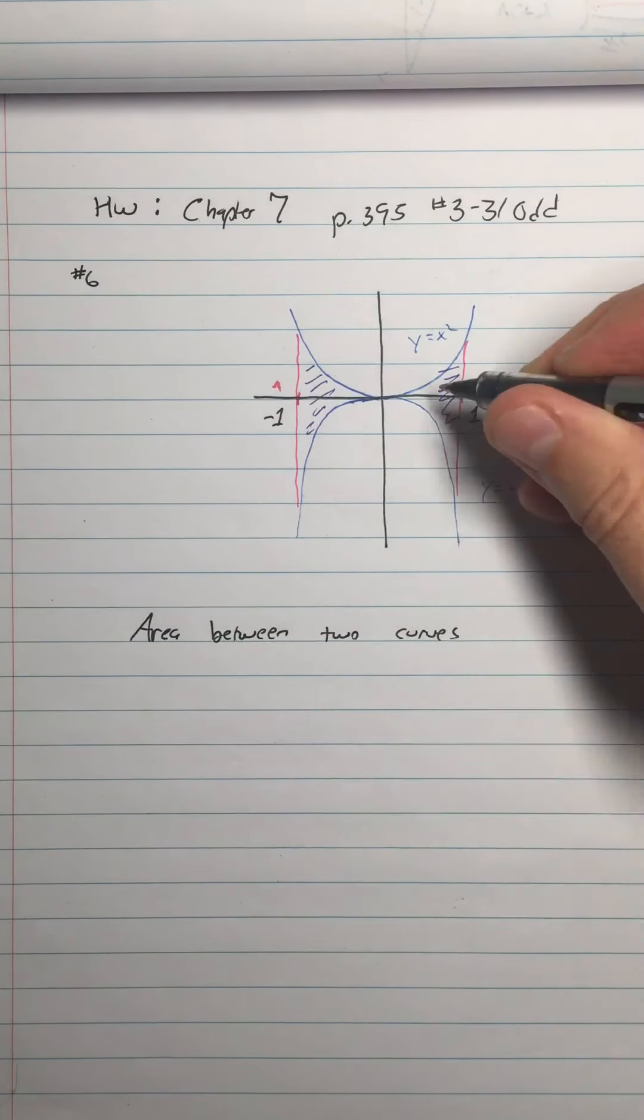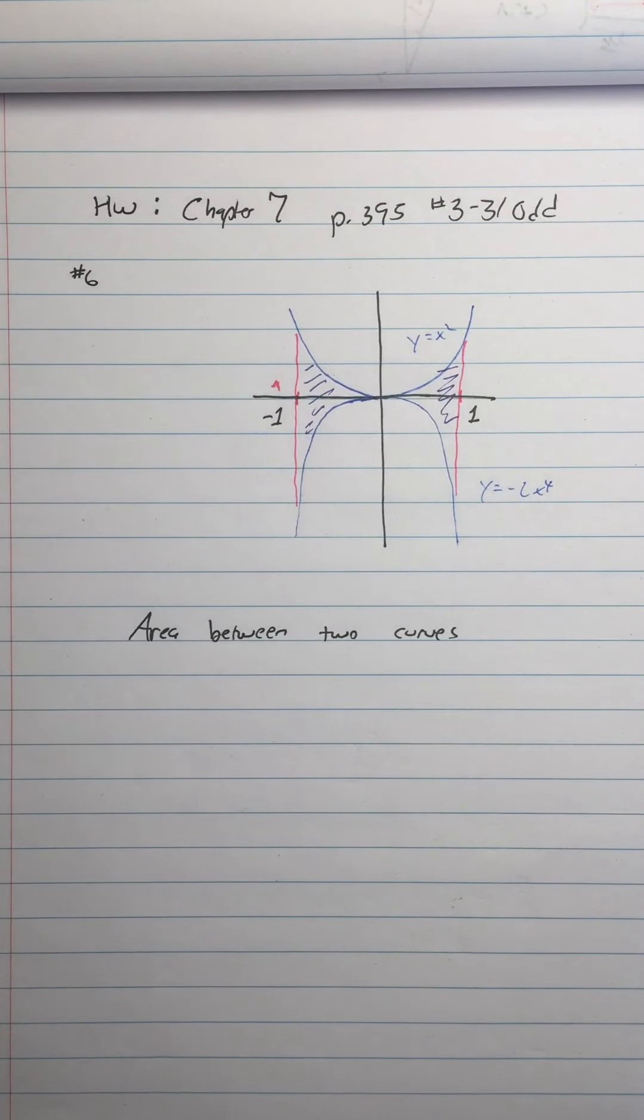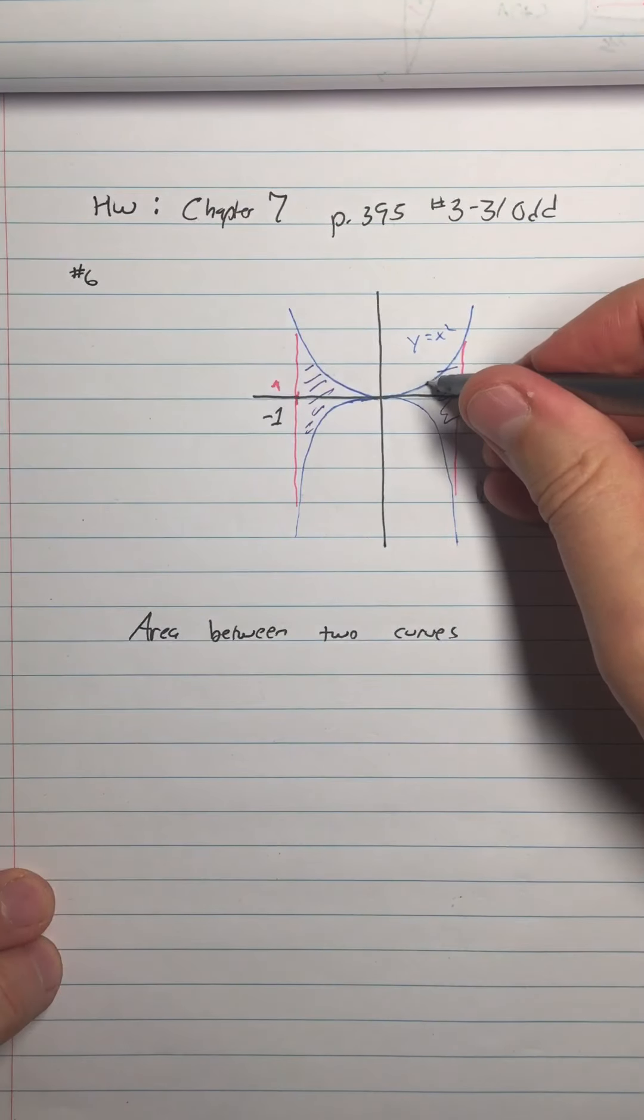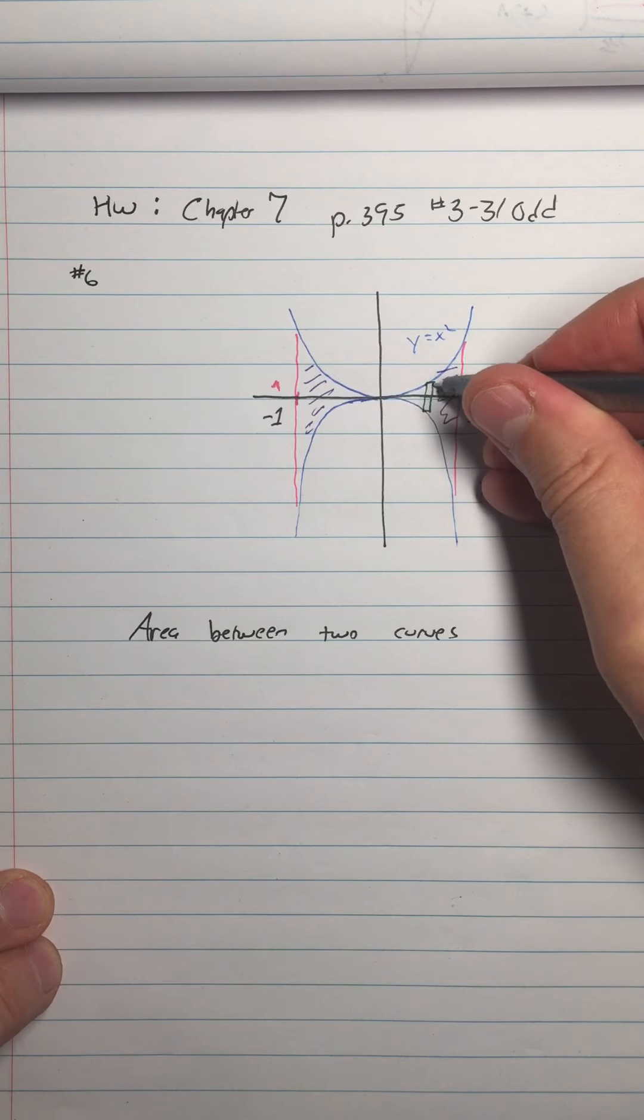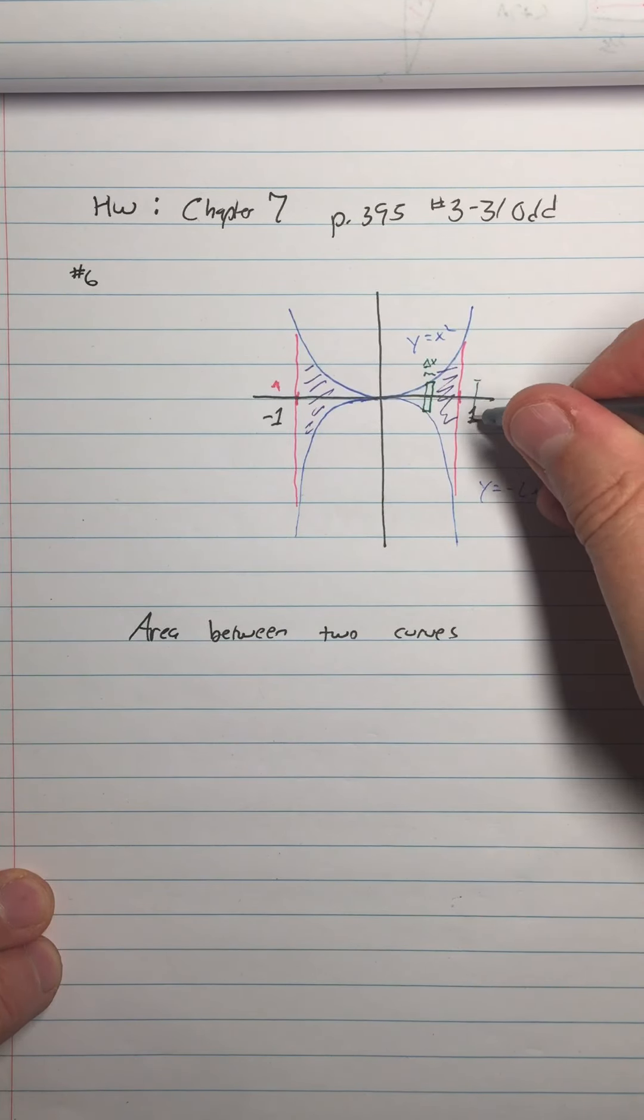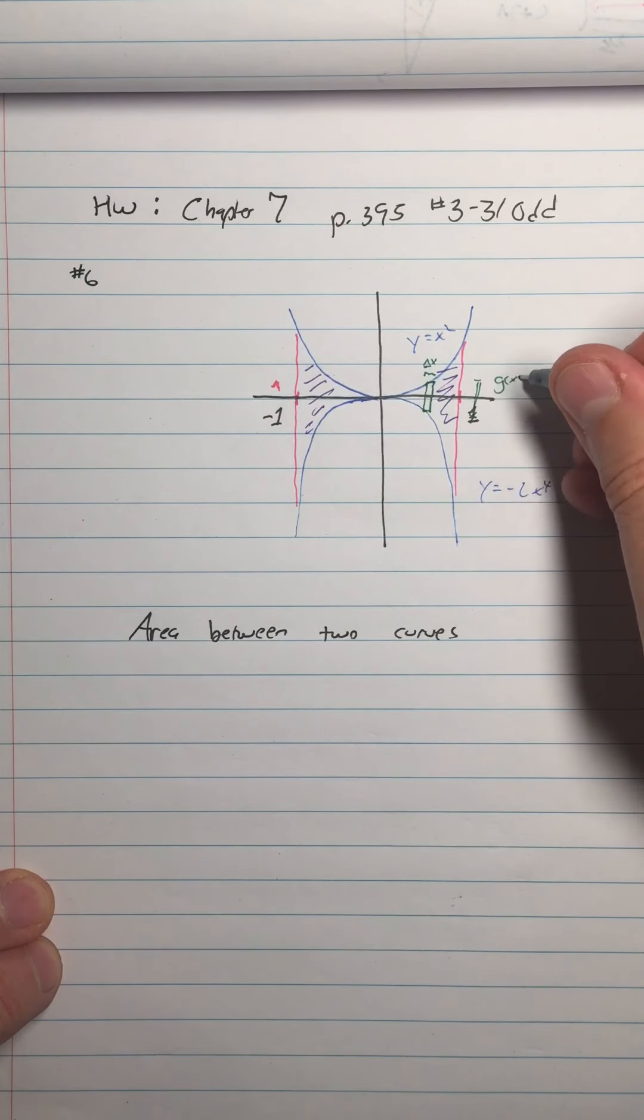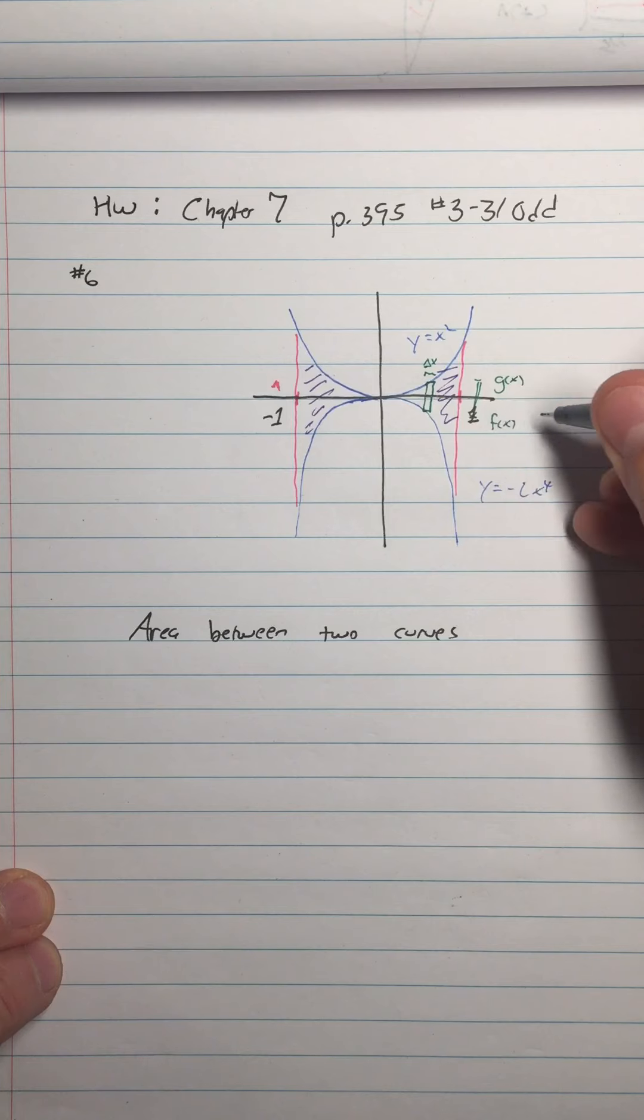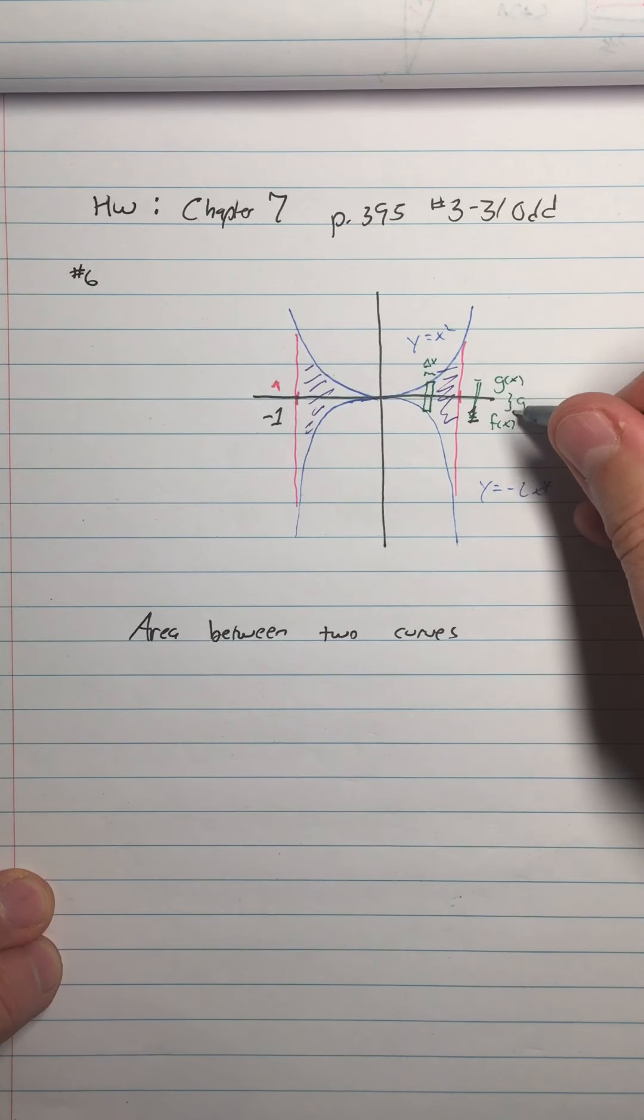Well, it's pretty clear that the height from here to here is going to be the top function minus the bottom function. So if you think of a representative rectangle in here, sometimes that's useful to do. Alright, the width of that rectangle is delta x, and the height of that rectangle, this distance is going to be my top function, let's call it g of x, and my bottom function, let's call it f of x. So the distance between them is going to be g of x minus f of x.